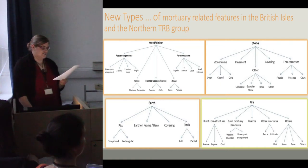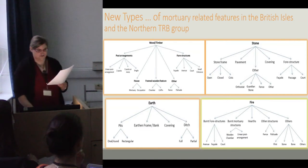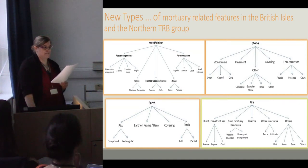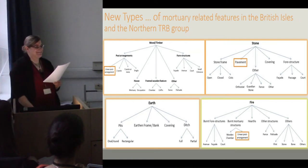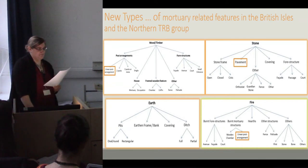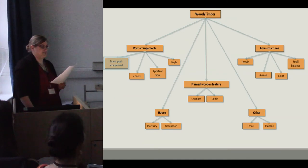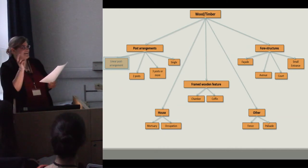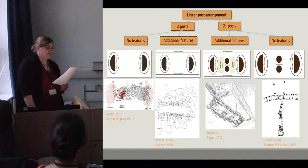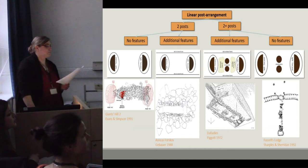Just as with Kinnis and Kossian's typologies, elements within the major categories can be combined and therefore overlap. For example, a linear post arrangement can have a stone pavement and been burned down. For each subtype I have created an idealized prototype. Let's have a closer look at the type I have called the linear post arrangement, which includes Kinnis's linear zone as well as Kossian's grave with complex wooden structures.